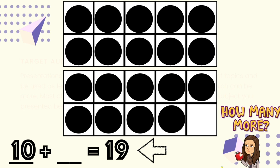Now, what should we do next? You got it! We need to count the counters to see how many more we added. Here we go! 1, 2, 3, 4, 5, 6, 7, 8, 9. We added nine more counters. 10 plus 9 equals 19.